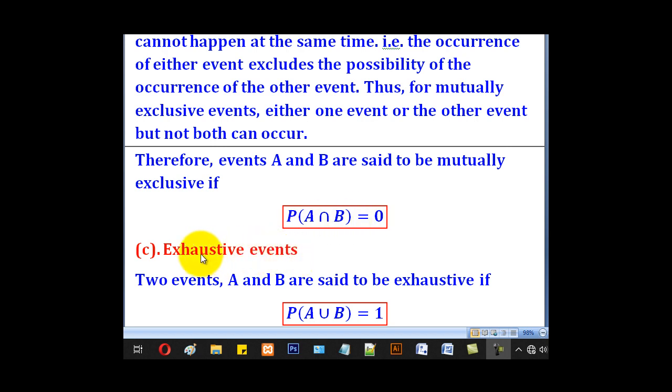Another type of event is called exhaustive events. Events A and B are said to be exhaustive if their union is equal to one.